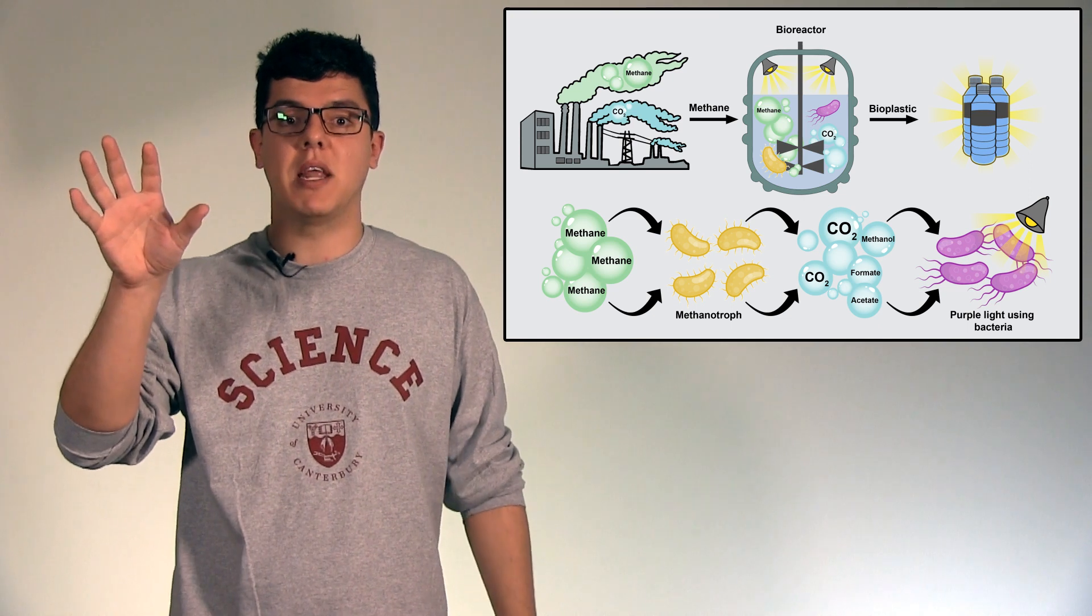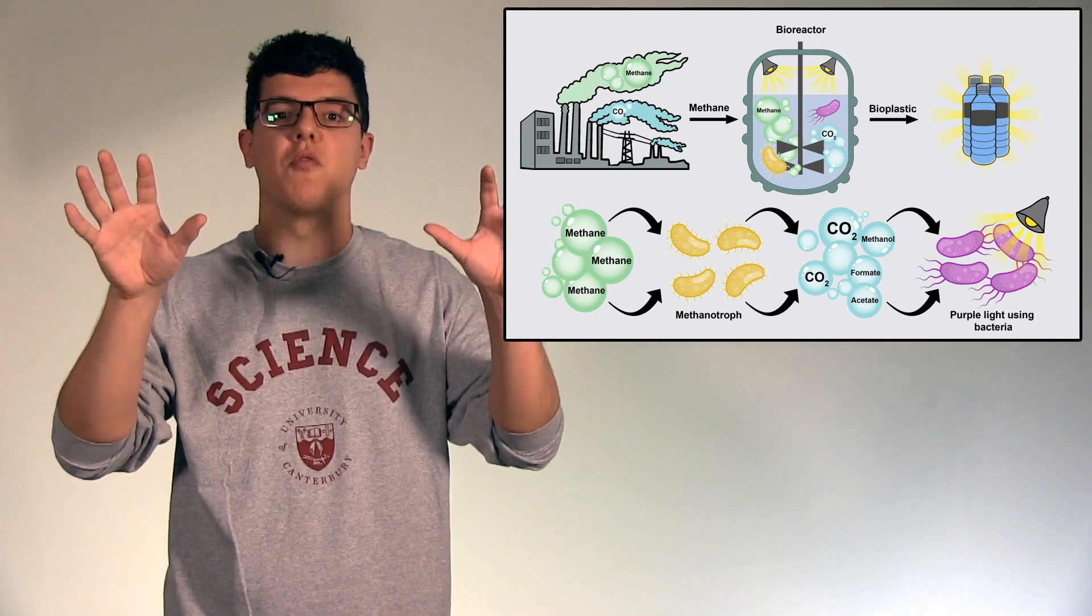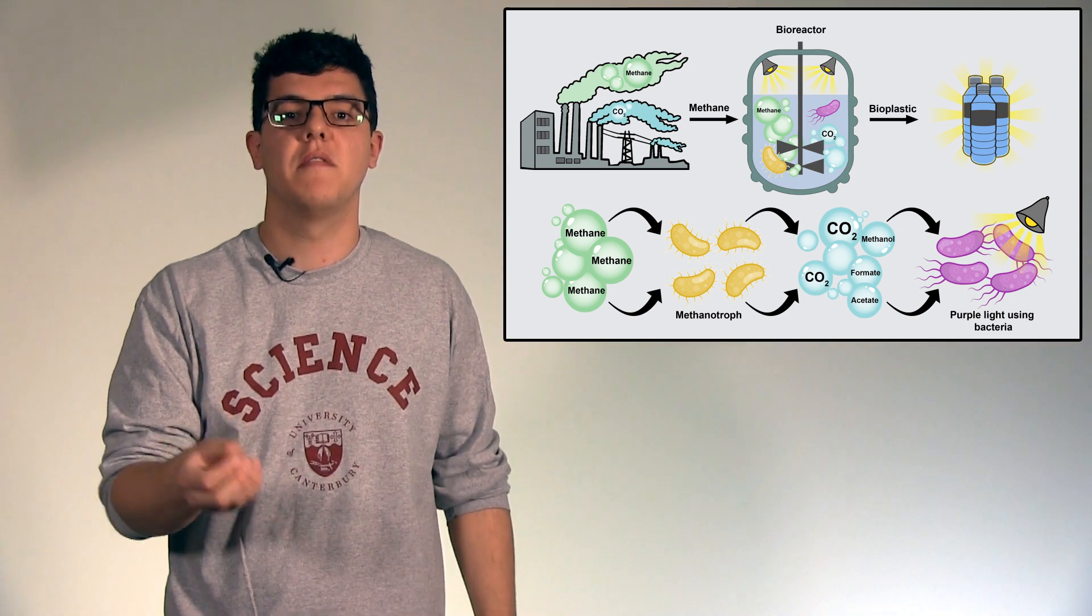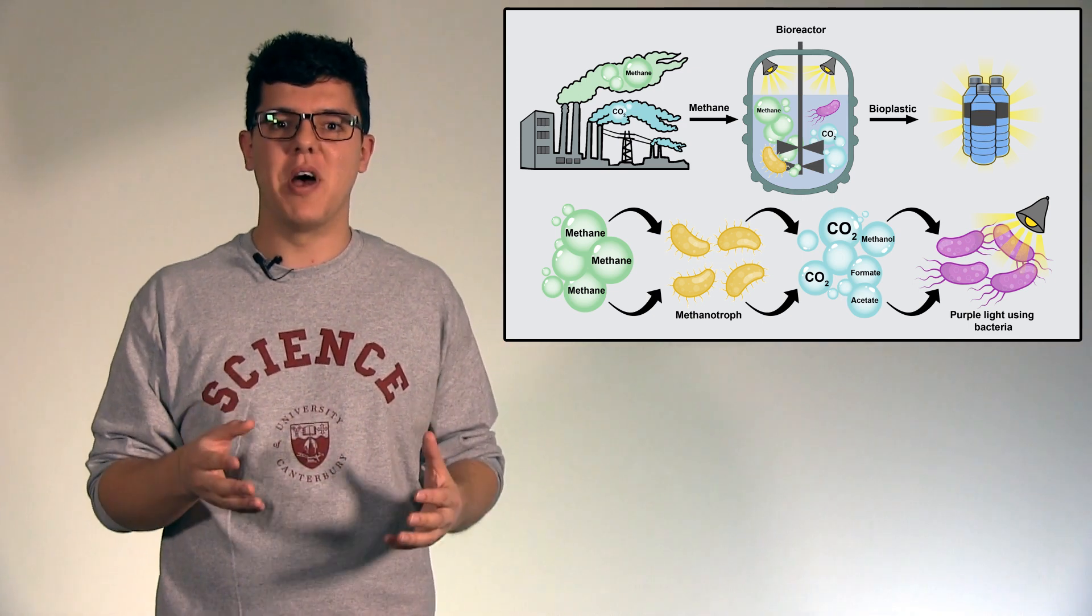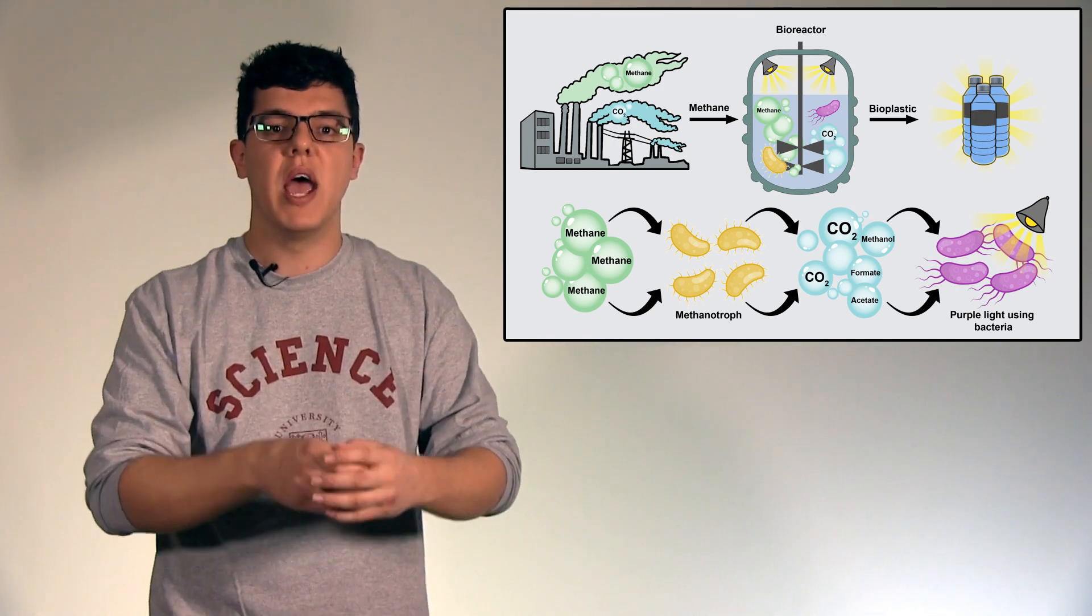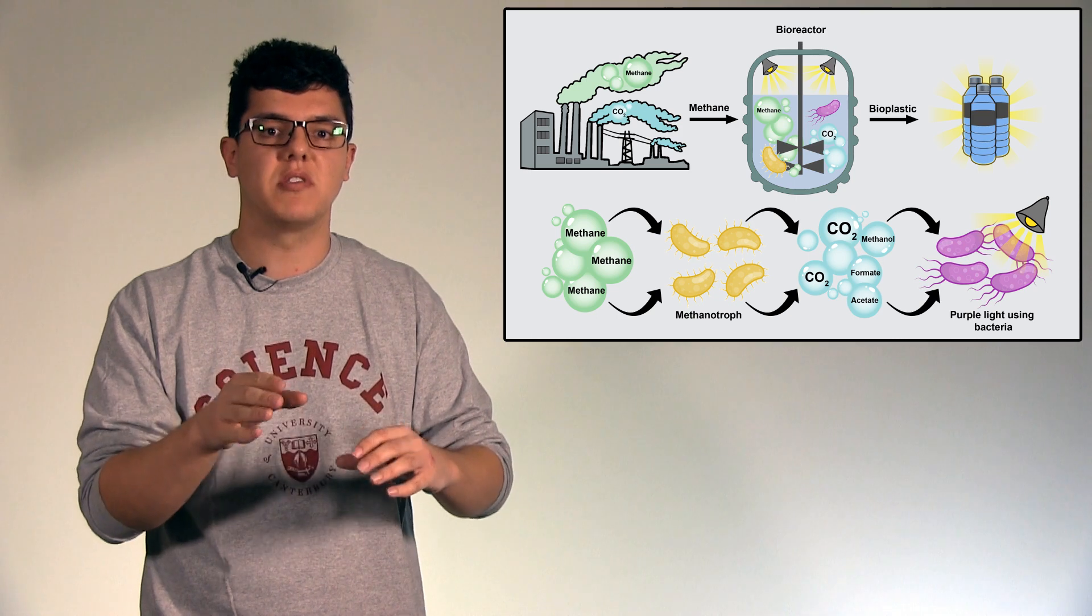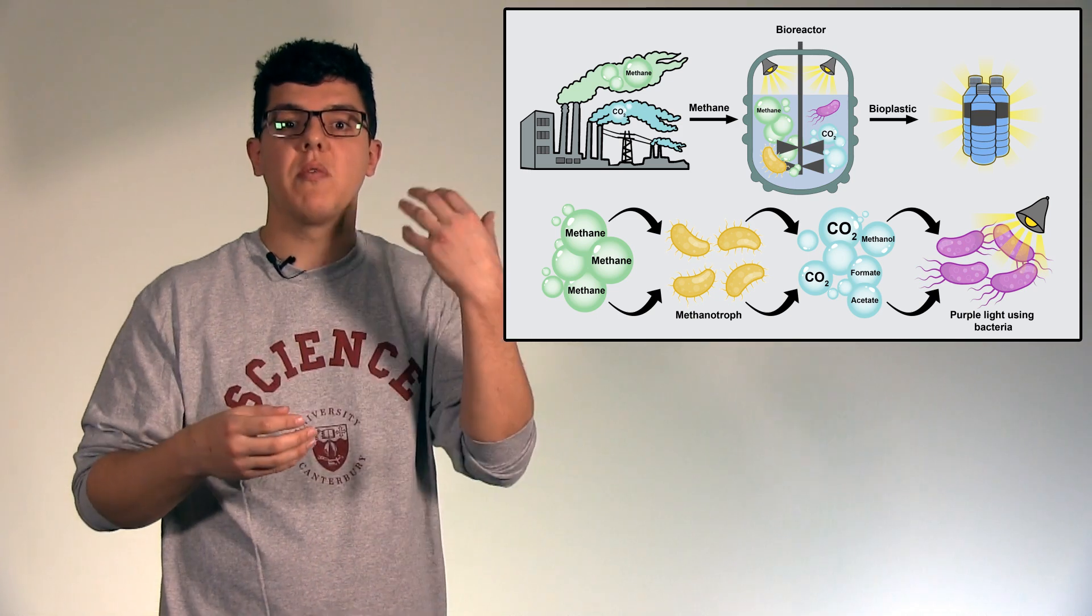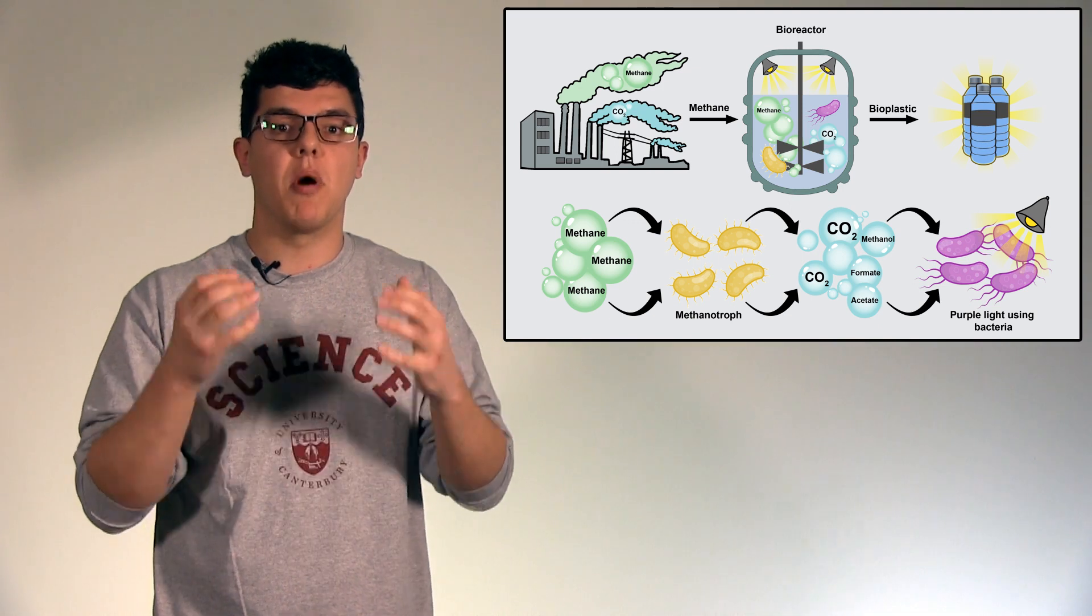Methano meaning methane eating. Troph relating to nutrients. Methanotroph. So these guys eat methane for food, which is pretty incredible. But in this process they release CO2 and other chemicals that they cannot process. These are the blue bubbles on the slide. So when they release CO2, this is a problem.